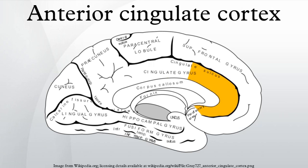The anterior cingulate cortex can be divided anatomically based on cognitive and emotional components. The dorsal part of the ACC is connected with the frontal cortex and parietal cortex, as well as the motor system and the frontal eye fields, making it a central station for processing top-down and bottom-up stimuli. By contrast, the ventral part of the ACC is connected with the amygdala, nucleus accumbens, hypothalamus, and anterior insula, and is involved in assessing the salience of emotion and motivational information.